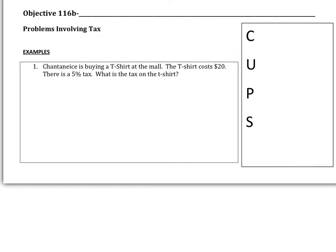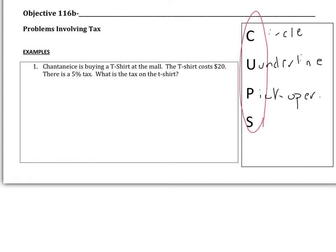While we go through these problems, please make sure that you're using CUPS. It's really important that we're using a reading strategy as we read. Remember: we want to Circle the question, Underline important information, Pick the correct operations, and Solve our problem. Also have a sanity check at the end to make sure that our answer seems reasonable — especially with money problems.